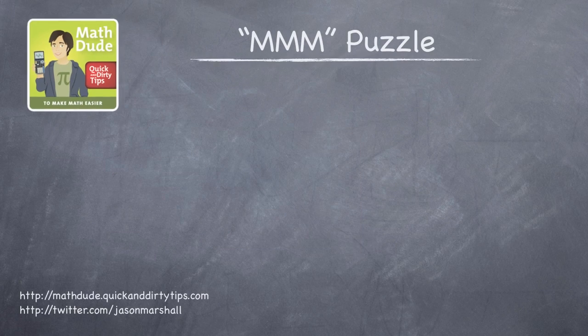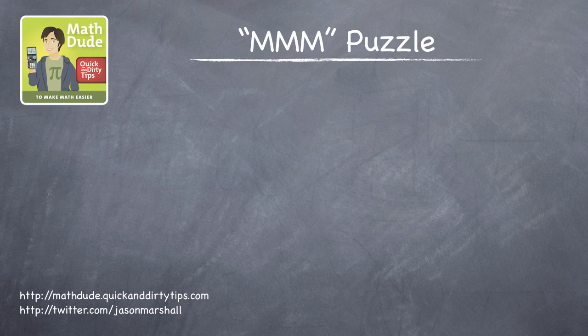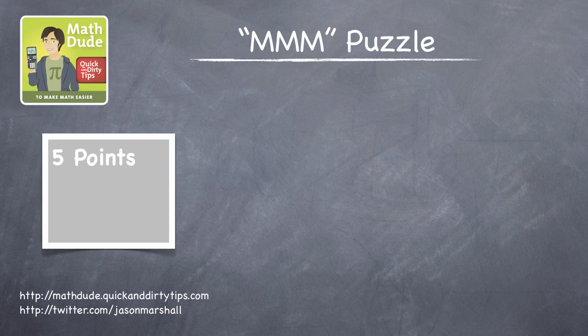Did you have a chance to think about the mean, median, and mode puzzle from episode 25? Here's the question to refresh your memory. Find a set of five data values with modes 0 and 2, median 2, and mean 2.